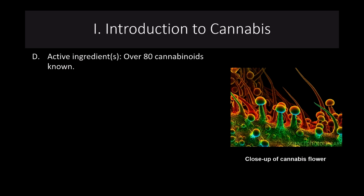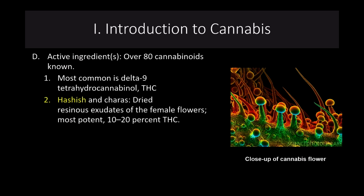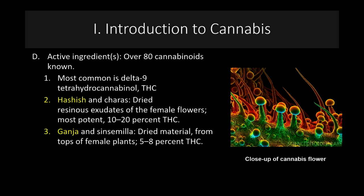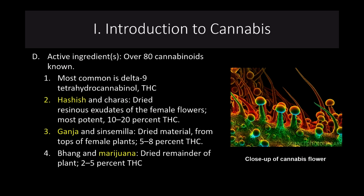There are over 80 to 113 cannabinoids known. The most common we'll discuss is delta-9-tetrahydrocannabinol, or THC. Hashish and charas are dried resinous exudates of the female flowers — the most potent form, about 10 to 20% THC. Ganja and sensimilla are dried material from the tops of female plants, about 5% to 8% THC. Bong and plain marijuana are the dried remainder of the plant, very low THC. CBD, or cannabidiol, is a different type of cannabinoid that works very differently from THC, and we'll discuss potential uses for cannabidiol in the next lecture.